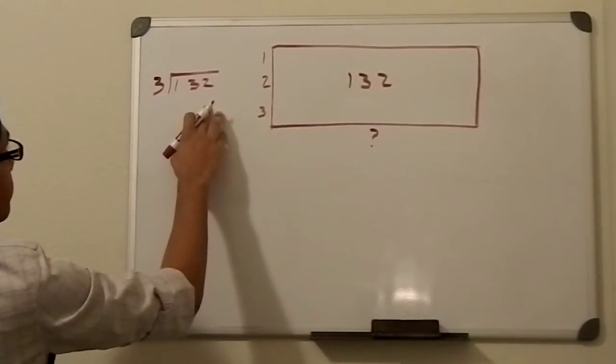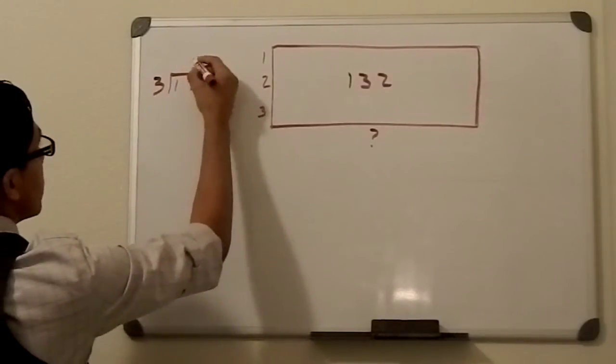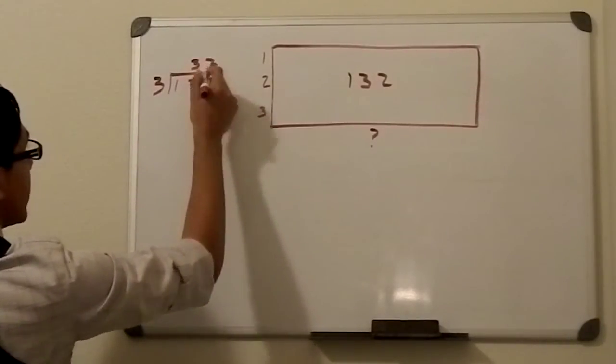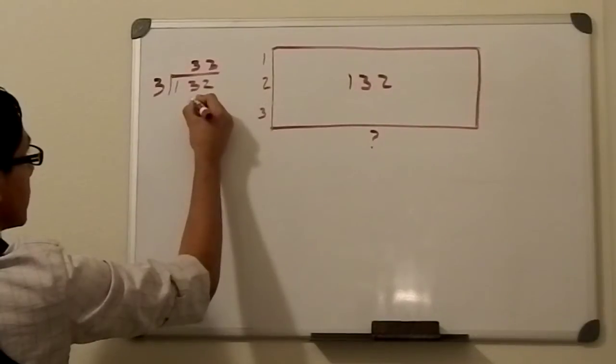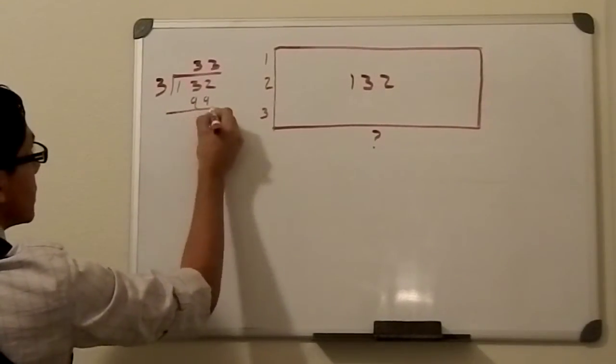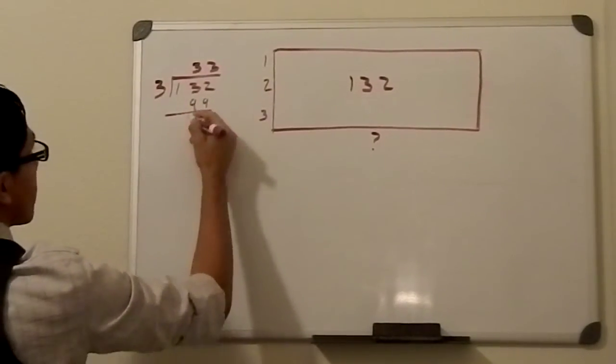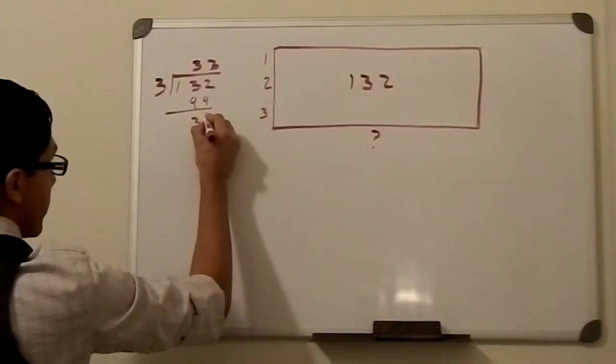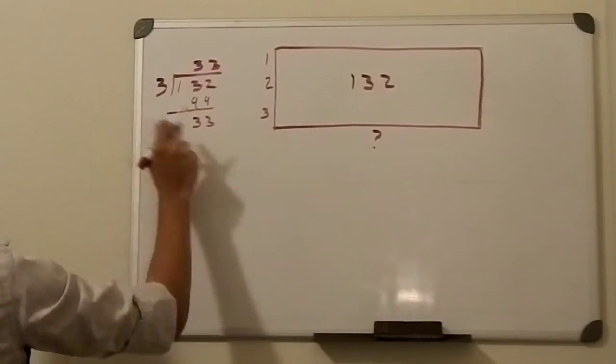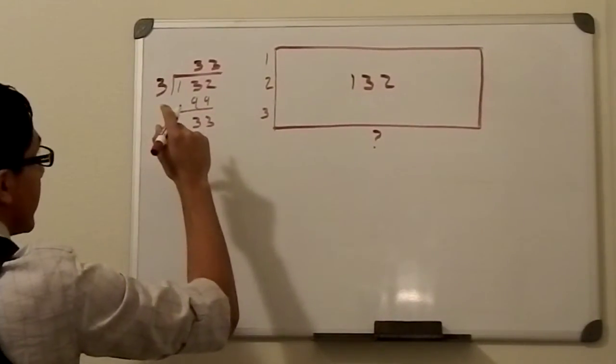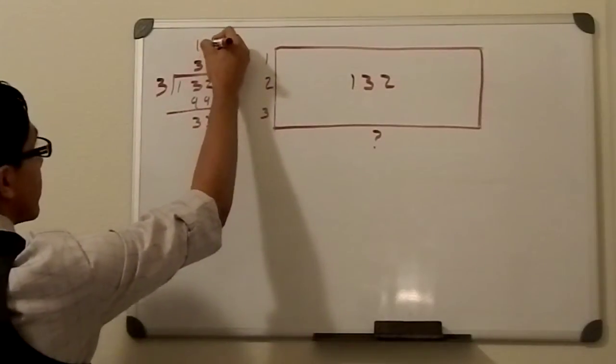33 times 3 equals 99. Subtract 99, we get 1. Bring down the 32. 3 goes into 33 eleven times, so let's write that right there. 11 times.